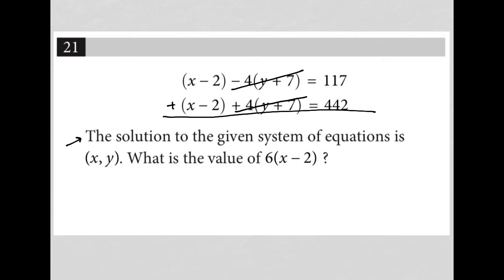I'd have x minus 2 plus x minus 2, which is just 2x minus 2, equals 117 plus 442, which is just going to be 559. So I have 2x minus 2 equals 559.